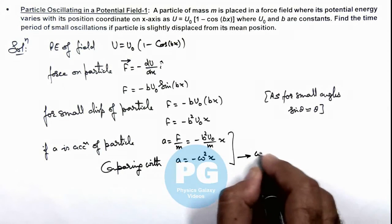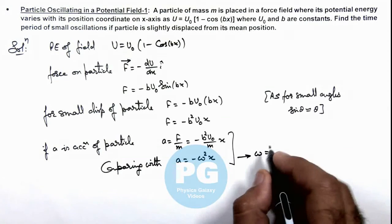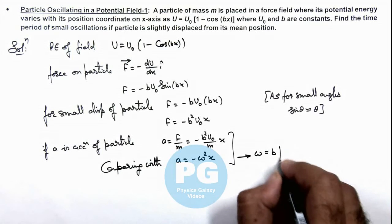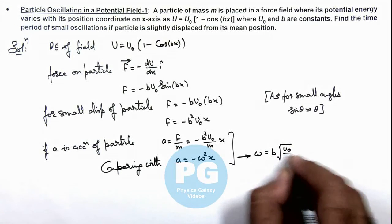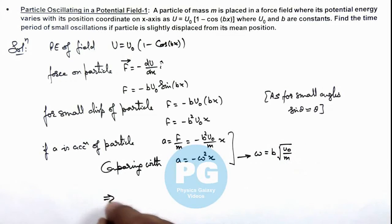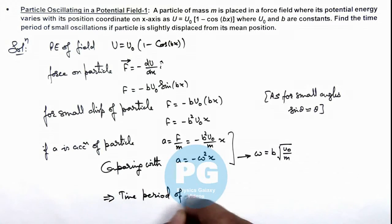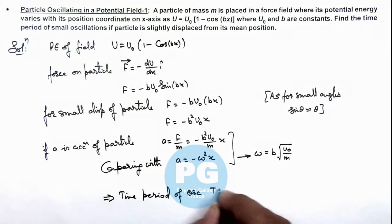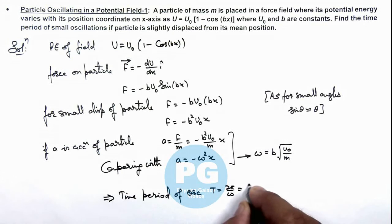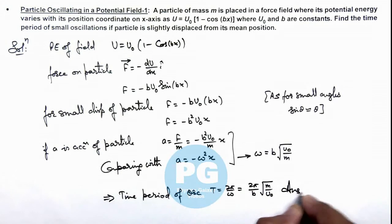we get the value of omega to be equal to b√(U₀/m). This implies we can write the time period of oscillations to be given as 2π/ω, which is equal to 2π/(b√(m/U₀)). That will be the final result of this problem.